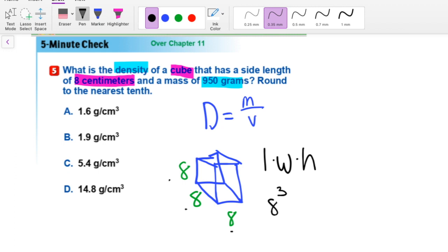Yep, 512. Alright, so we know that 8 cubed is 512. And now we know that this is the volume because the formula for volume is length times width times height. So now we know that 512 is the volume.